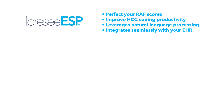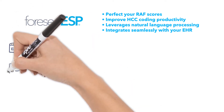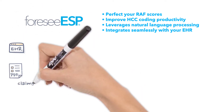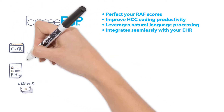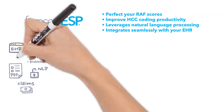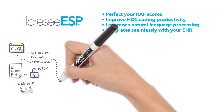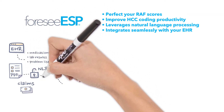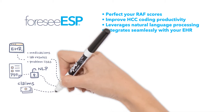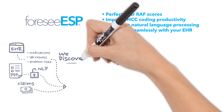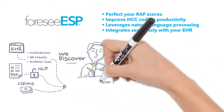ForCESP software helps your organization perfect your RAP scores and improve HCC coding productivity five to tenfold. Our disease detection algorithms and machine-learned natural language processing rationalize your patient data across the healthcare system.